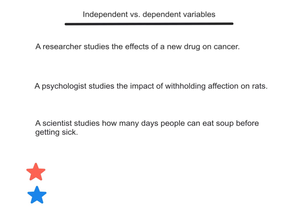In this short video, we're going to talk about the difference between independent and dependent variables. These can vary from person to person, study from study. We have three different examples here, and I'm going to circle in red the independent variable and in blue the dependent variable.